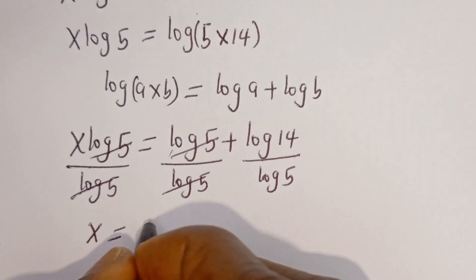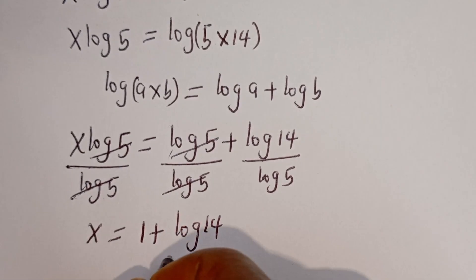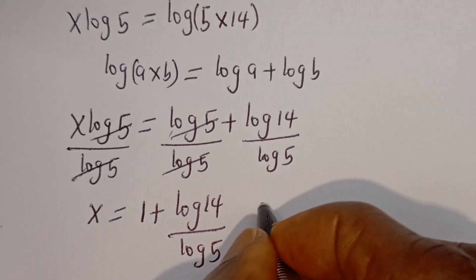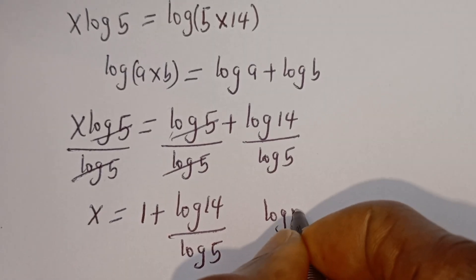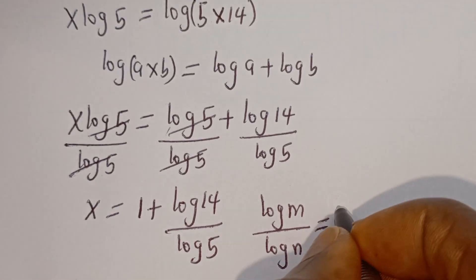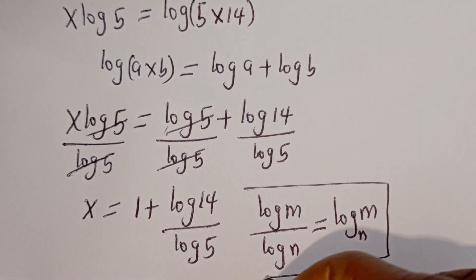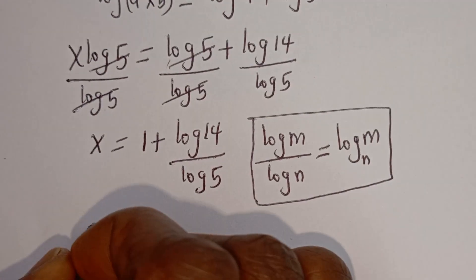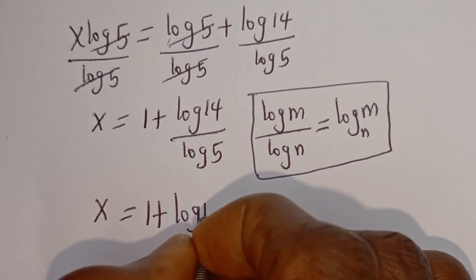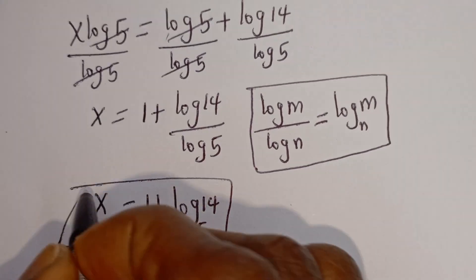X is equal to 1 plus log 40 divided by log 5. Then if you have log M divided by log N, this is equal to log base N of M. So here we have X is equal to 1 plus log base 5 of 14. And this is the final answer from the first method.